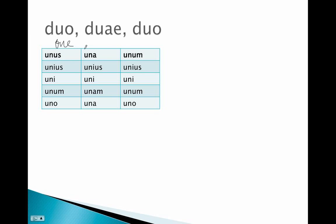So unus, una, unum - we've got three terminations: one, two, and three - masculine, feminine, and neuter. The genitive is -ius, the dative is -i, but otherwise it's normal.